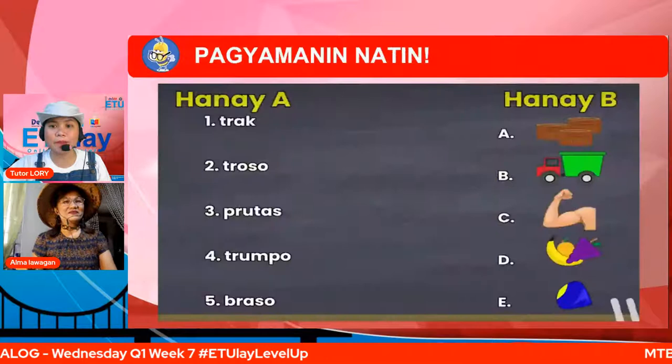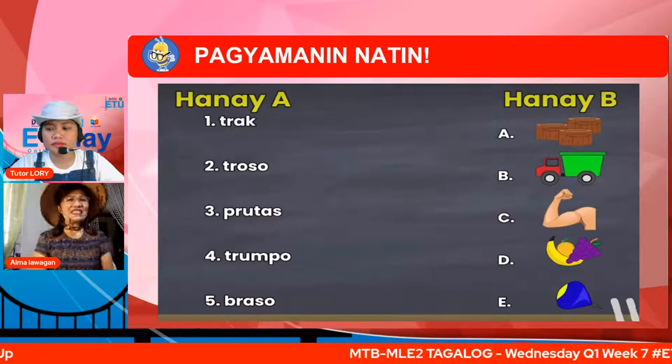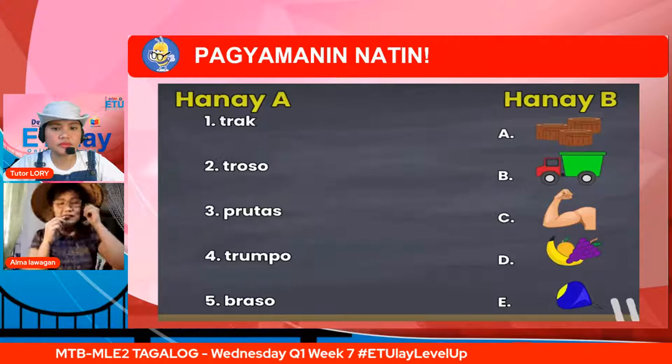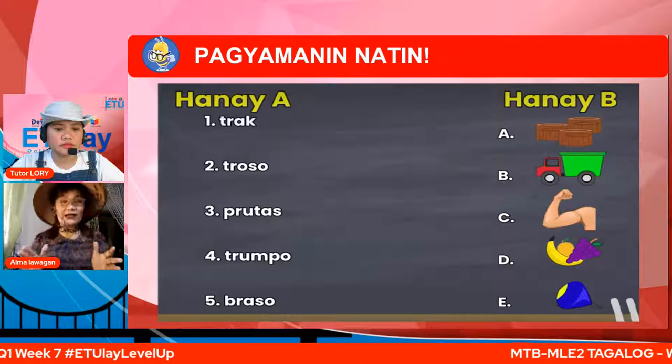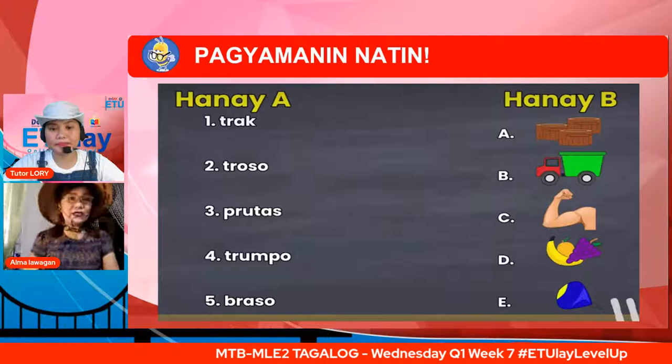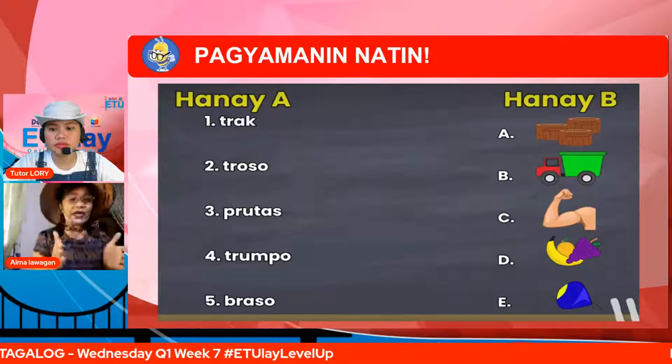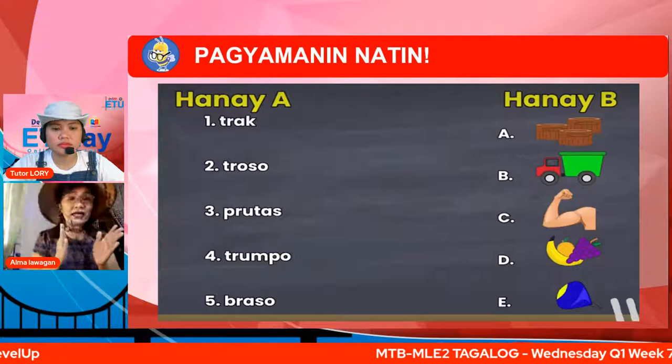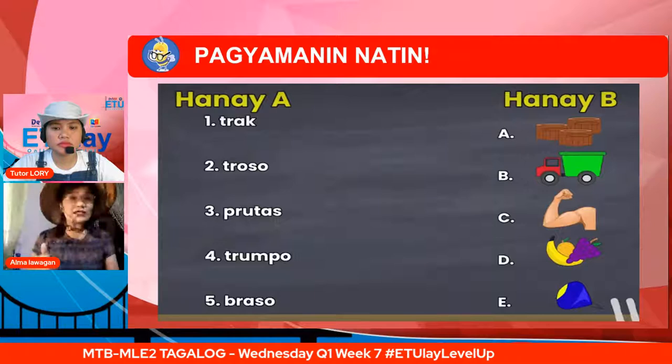Tignan natin kung ang husay at galing ng ating mga chuti ngayong araw. Tignan, mga chuti, ang hanay A at ang hanay B. Sa hanay A ay may mga salitang kambal katinig: kunat, tron, tronso, pruta, trumpo, at braso. Sa hanay B naman ay may mga larawan — letrang A, B, C, D, at E. Subukan na natin ang inyong galing.